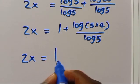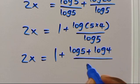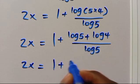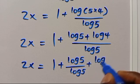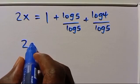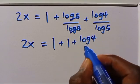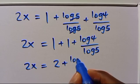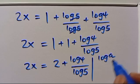So from here, 2x equals 1 plus log of 5 times 4 over log 5, which expands to 1 plus log 5 plus log 4, all over log 5. Splitting again, we have 2x equals 1 plus log 5 over log 5 plus log 4 over log 5. Since log 5 over log 5 equals 1, we have 2x equals 1 plus 1 plus log 4 over log 5, giving us 2x equals 2 plus log 4 over log 5.